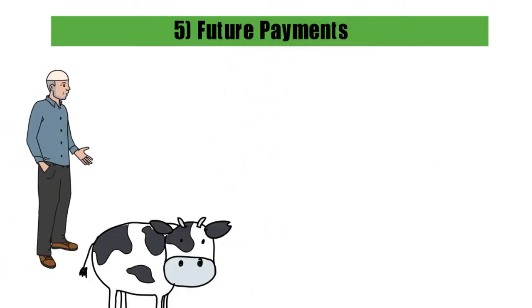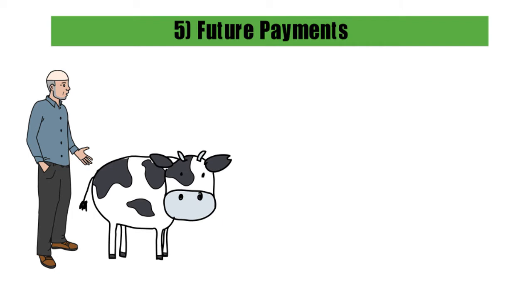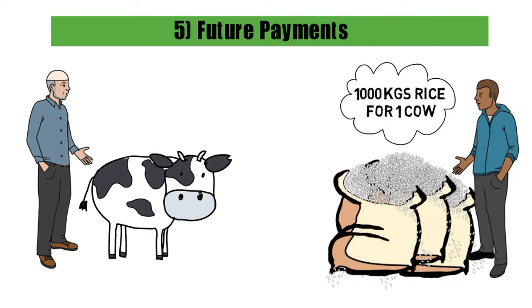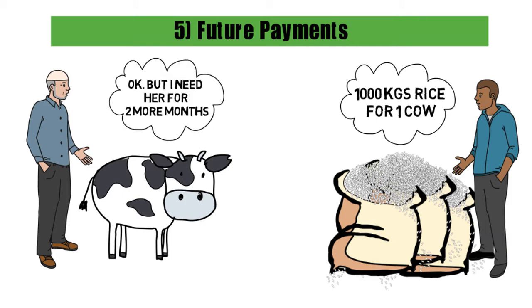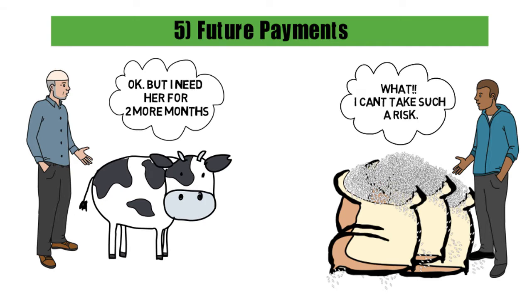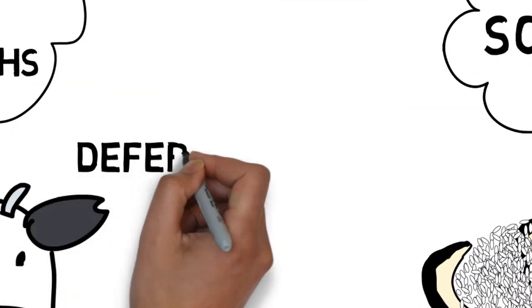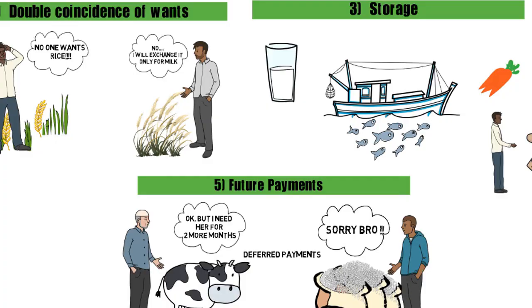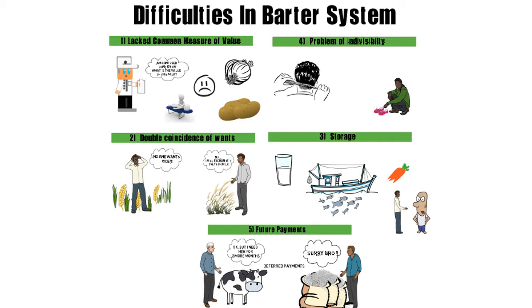Last but not the least, providing payments in the future were also difficult. This means that a person may want a cow in return for the food that he is selling. The buyer may tell him that he is willing to give the cow after two months. However, in those two months, the cow might get sick and may lose its milk-giving capacity. Hence, future payments, or deferred payments as they are called in economics, were also one of the problems in the barter system.